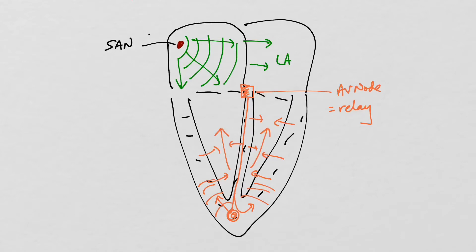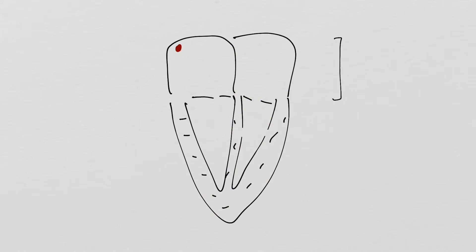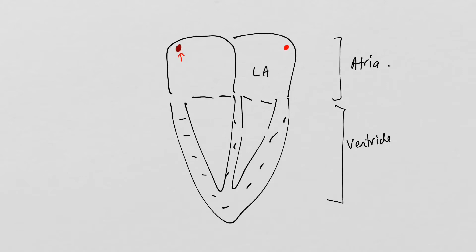So how do ectopic beats fit in? We understand that the top two chambers are the atria and the bottom two are the ventricles. An ectopic beat is simply a heartbeat that originates not from the natural pacemaker but from an alternate site — for example in the left atrium or from an alternate site in the right atrium. When this ectopic beat fires in a way that interrupts the natural heartbeat, it is called an atrial ectopic beat.